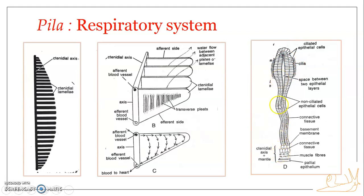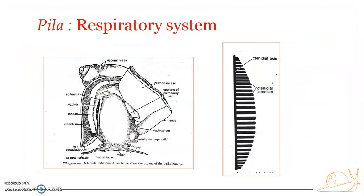This is a transverse section of a single ctenidial lamella. On the outer side, cilia are present. The beating of cilia on the lamellae keeps the water moving — this is an important feature of aquatic respiration.